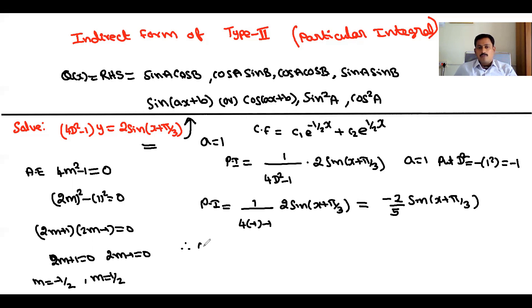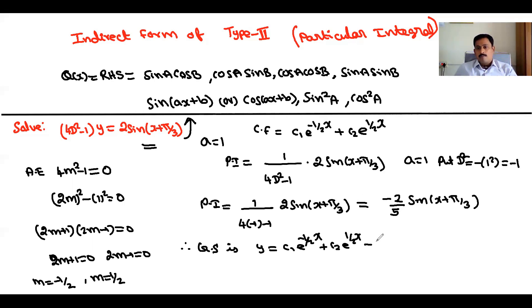Therefore the general solution is: y = c₁e^(−x/2) + c₂e^(x/2) − (2/5) sin(x + π/3), which is the required answer.